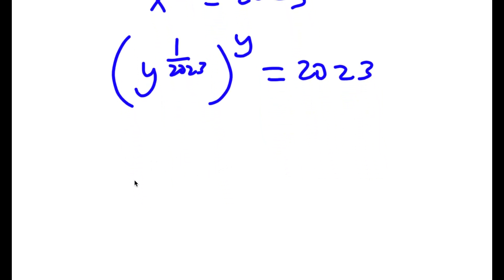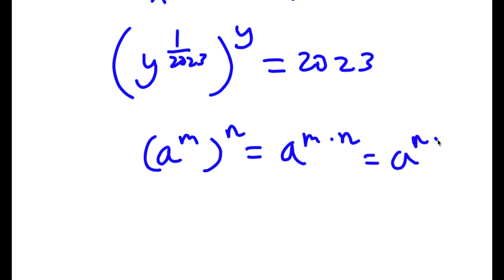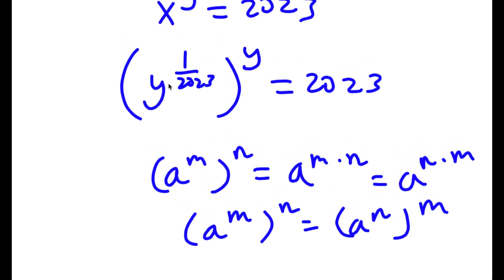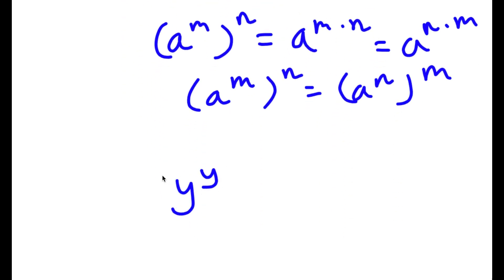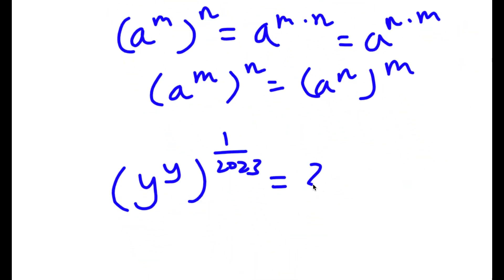Now, if I have something in the form a to the power of m to the power of n, this equals a to the power of m times n. And since multiplication order doesn't matter, a to the power of m to the power of n also equals a to the power of n to the power of m — you can switch the order of the two. So for y to the power of 1 over 2023 to the power of y, I'll switch the order to get y to the power of y to the power of 1 over 2023, and this is equal to 2023.